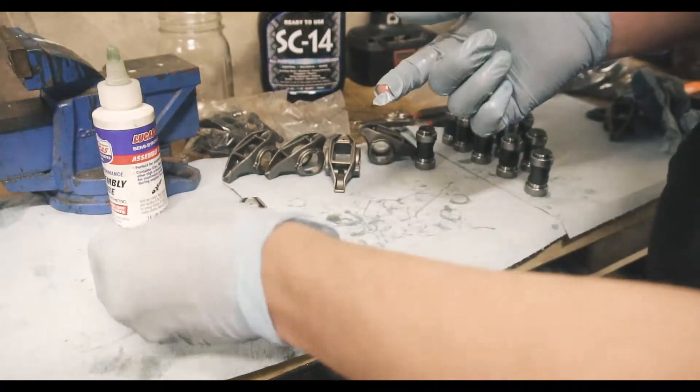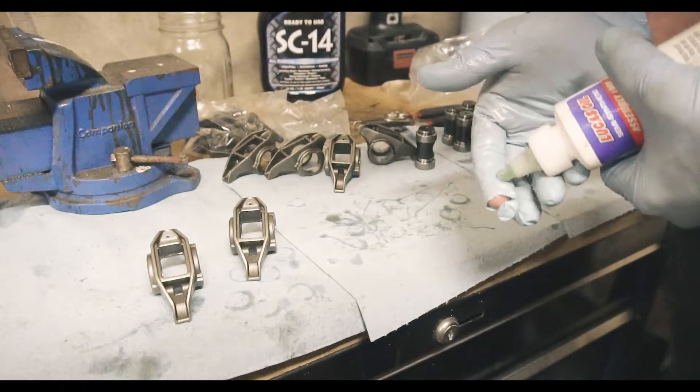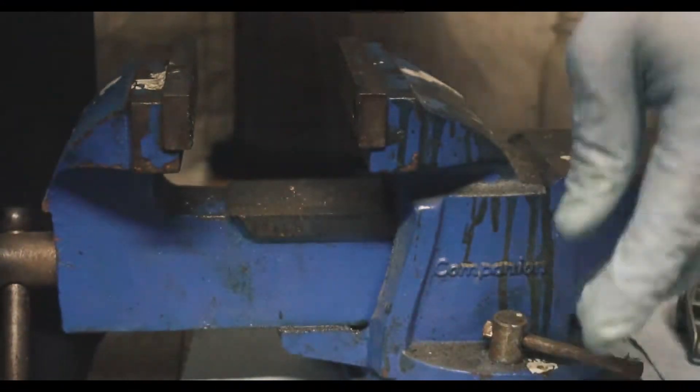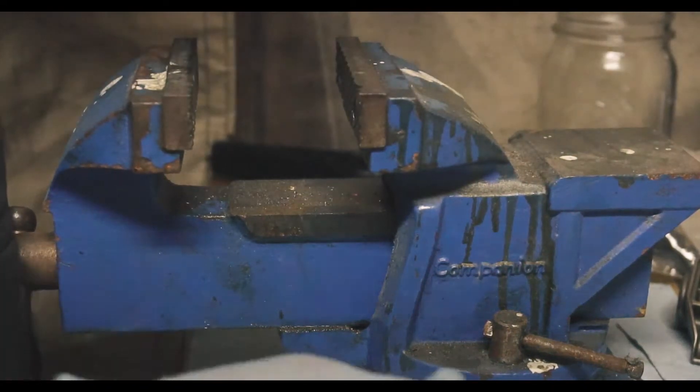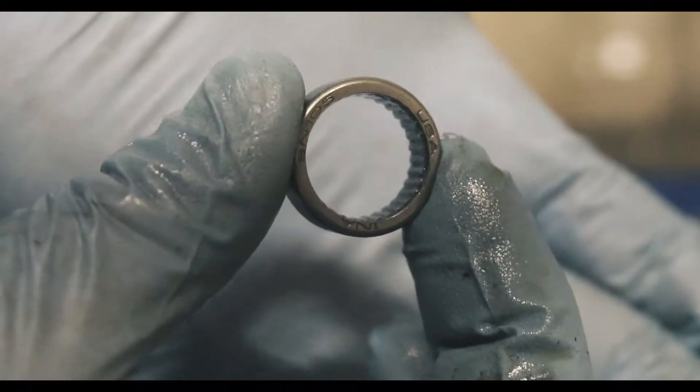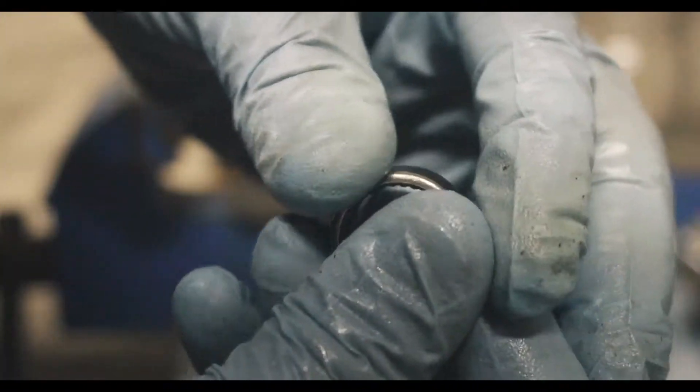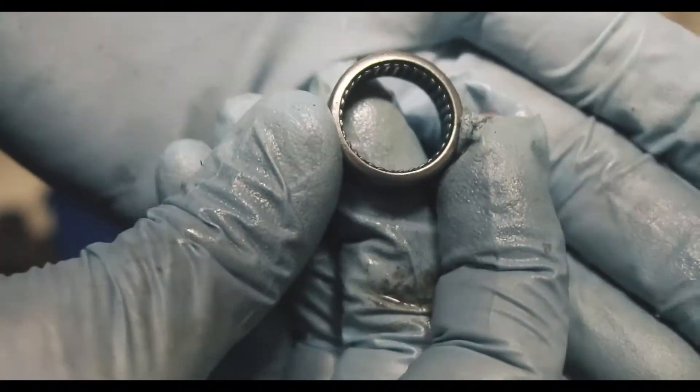We're going to lube any surfaces that are going to be rubbing metal against metal, keep friction down hopefully. Make sure the words are facing up. See the words engraved in it? The other side, nothing.